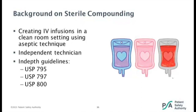Depending on the type of clean room and sterile products being made, there are three different standards: USP-795 for non-sterile compounding, USP-797 for sterile compounding — which is what's done in the clean room and is the bulk of this presentation — and USP-800 for hazardous drugs, specifically chemotherapy.